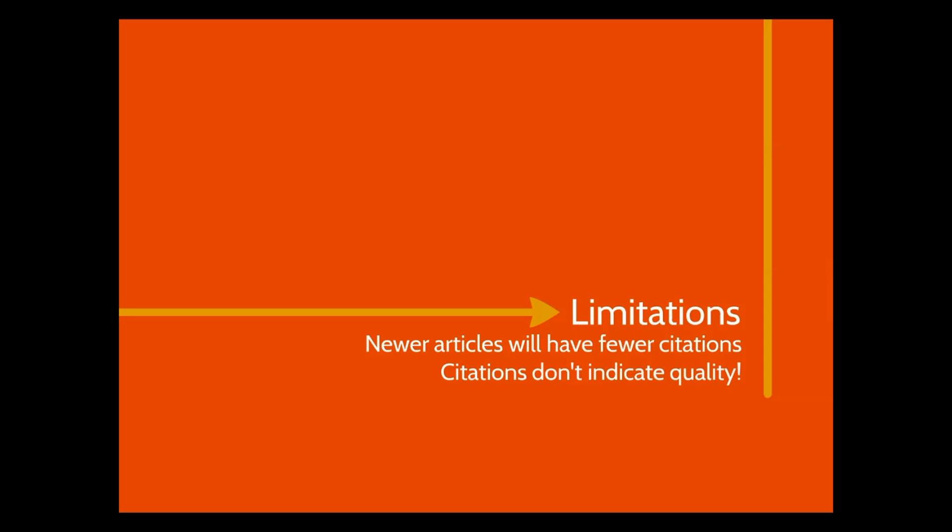Remember, citations don't tell you anything about the quality of research. People might be citing an article because they disagree with it. You should use bibliometrics alongside other information about a person or publication to make sure you get a broader picture of their performance.